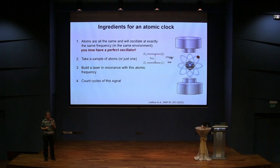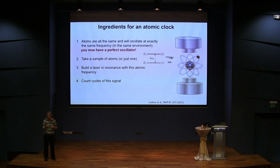You can keep your ion there for a while — you can even name your ion as a pet if you keep it there for a few months, though eventually you get a new ion. Pete will tell you much more about trapping ions and keeping them in traps. Then you build a laser in resonance with this atomic frequency and count the cycles of the signal.